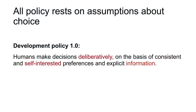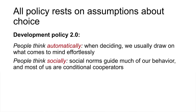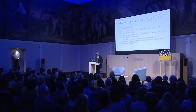In traditional development policy, the assumption was that people make decisions deliberatively on the basis of consistent and self-interested preferences and explicit information. In the report, we argue that we need to rethink how people decide and behave. People think automatically — they usually draw on what comes to mind effortlessly. They think socially — social norms guide much of our behavior. And finally, we think with mental models — information coming in is filtered through our conception of the world and of ourselves.